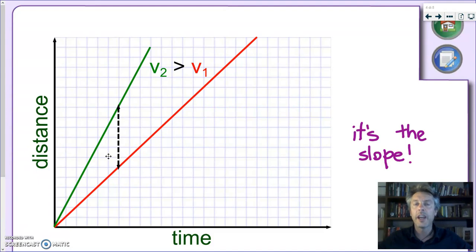What if we have two different objects, each traveling at its own speed? Let's imagine they all start at the same place, at the same time, and the motion of the first object is represented by this red line, and the motion of the second object is represented by the green line.